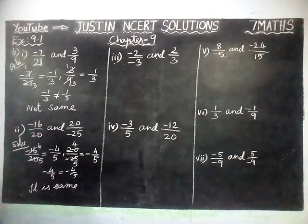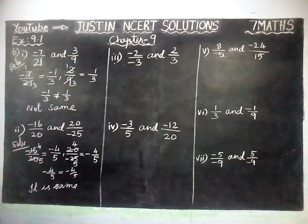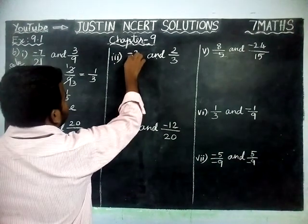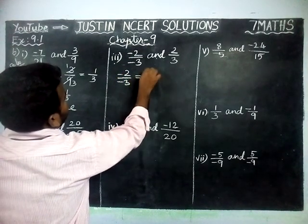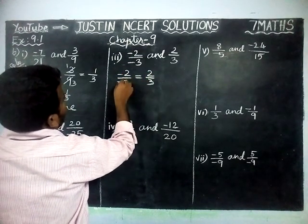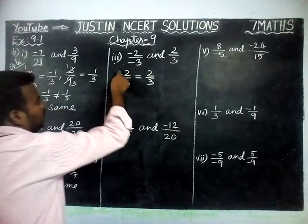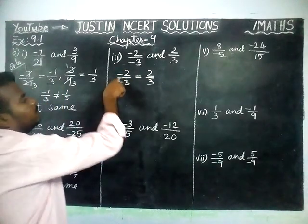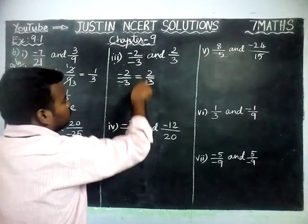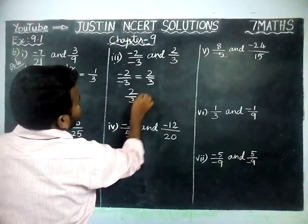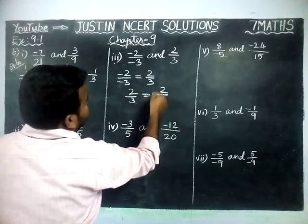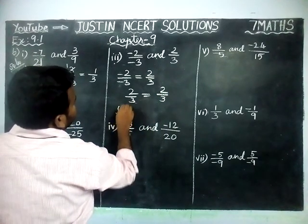Third pair: minus 2 by minus 3 and 2 by 3. Here minus 2 by minus 3 is equal to 2 by 3, because minus divided by minus gets cancelled. So that is 2 by 3, and the other number is already 2 by 3. Therefore 2 by 3 equals 2 by 3 — it is the same.